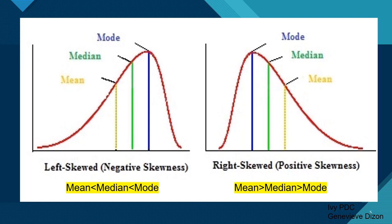Another picture shows the curve in detail. The left skewed curve means that there are data scattered on the left that should not be there. When we have the left skewed curve, the mean is less than the median, and the median is less than the mode. On the right side, we have the right skewed or positive skewness, meaning there are values scattered on the right side, and the mean is more than the median and more than the mode.